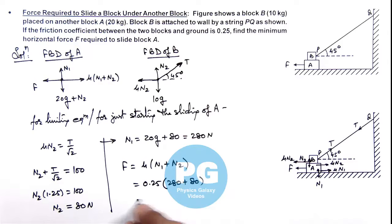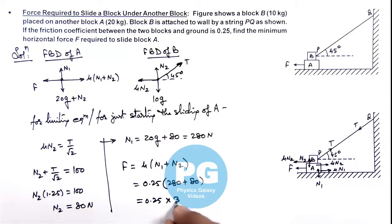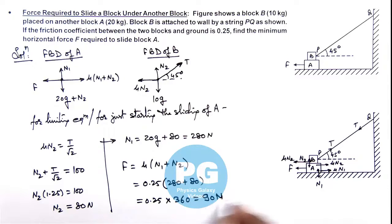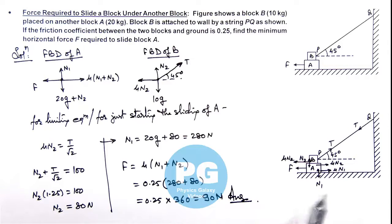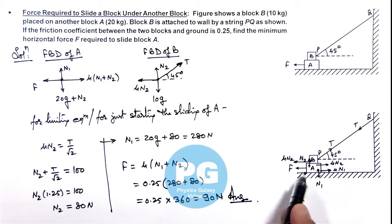That is 0.25 multiplied by 360, which gives us 90 newtons. So the minimum force required to start sliding block A is 90 newtons.